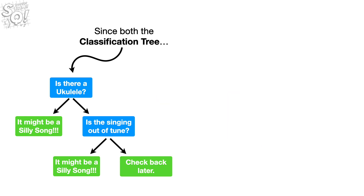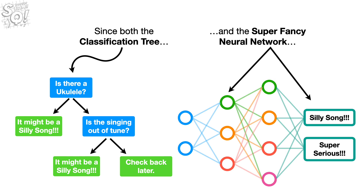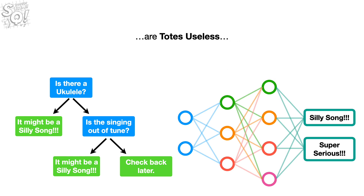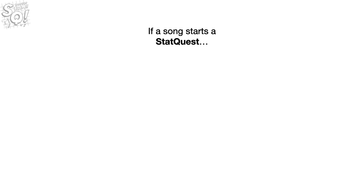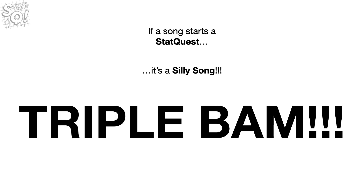Since both the classification tree and the super fancy neural network are totes useless, how can we identify a silly song? It's easy. If a song starts a StatQuest, it's a silly song. Triple bam!